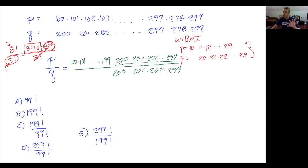So literally the numerator since it's bigger than the denominator all of that part cancels, so really the answer to the question p over q is 100 times 101 times 102 all the way up to 198, 199.